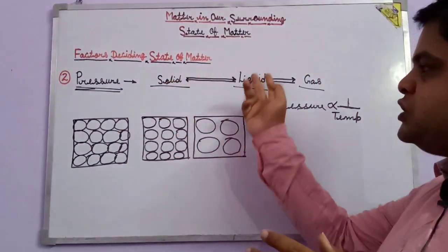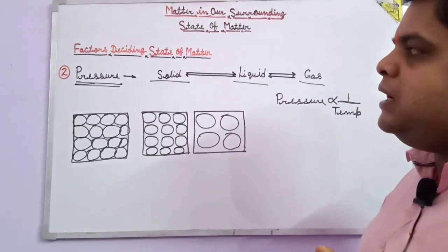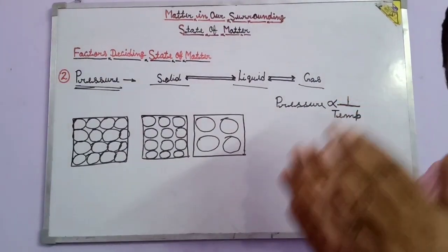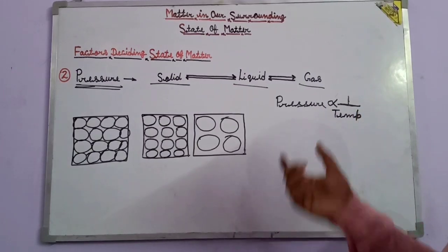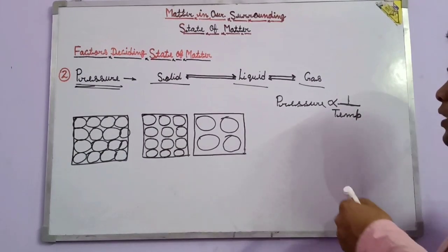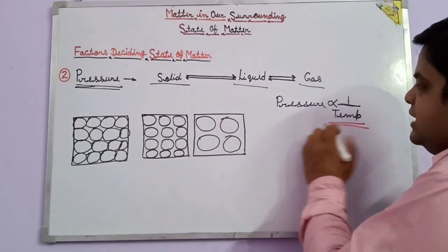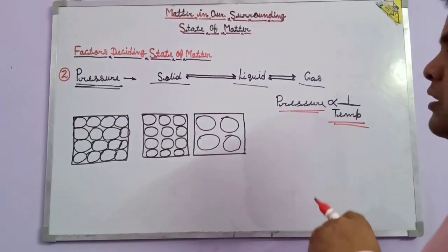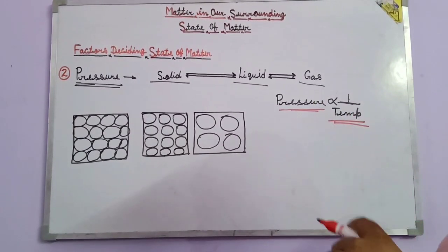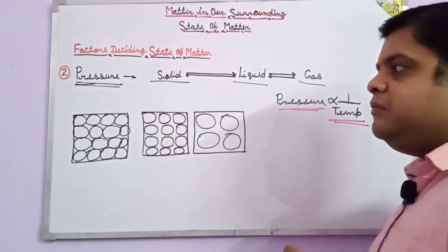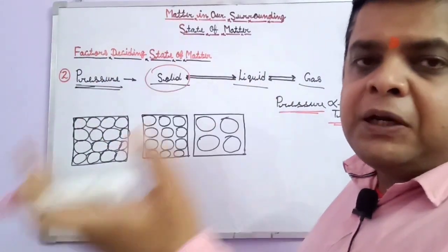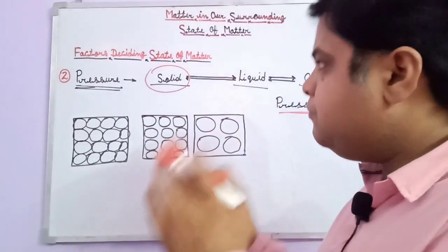One important thing about pressure: pressure and temperature are inversely proportional. When one increases, the other decreases. When the temperature increases, the pressure decreases. When pressure increases, the temperature decreases. Because after heating the molecules, the inter-particle space increases and inter-particle force weakens.